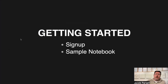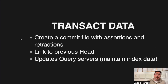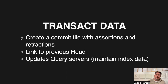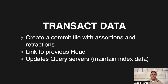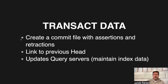When you transact data, we're creating commit files, and this will be important later on — you're going to get assertions and retractions in each commit file. You link to the previous head — basic blockchain data structure — and then it broadcasts those updates to any query servers that are listening. Those query servers maintain the indexed data, likely in memory, so they can serve it faster.